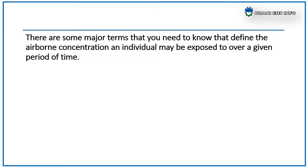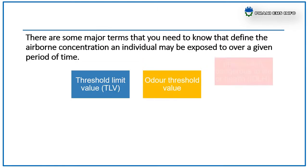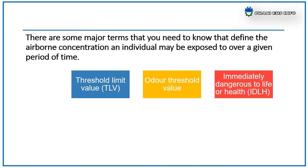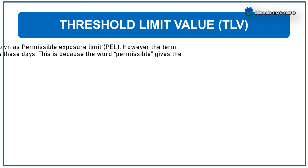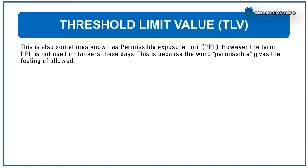There are some major terms you need to know that define the airborne concentration an individual may be exposed to over a given period of time. The first one is Threshold Limit Value (TLV). This is also sometimes known as Permissible Exposure Limit (PEL).